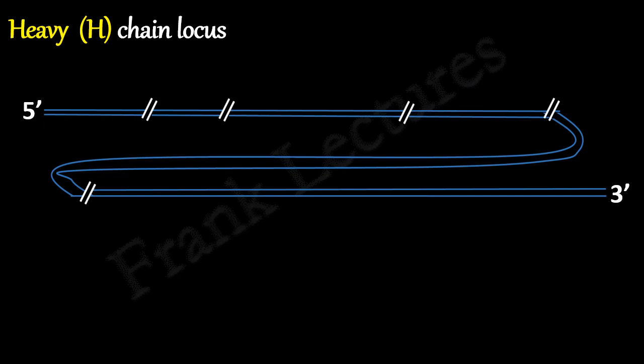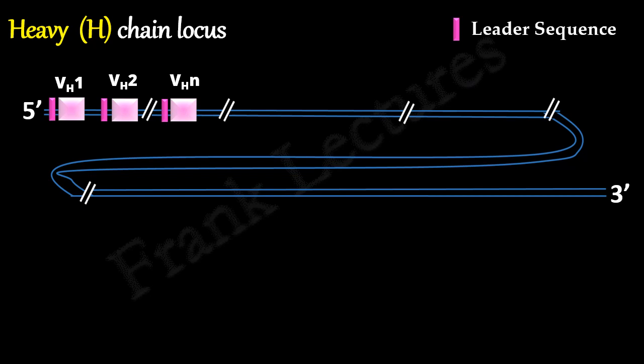Let's say this is our immunoglobulin heavy chain locus in the germline DNA. These are V gene segments. Again, each V gene segment is preceded by a leader sequence. Next to this cluster of V gene segments, D gene segments are present, followed by J gene segments.